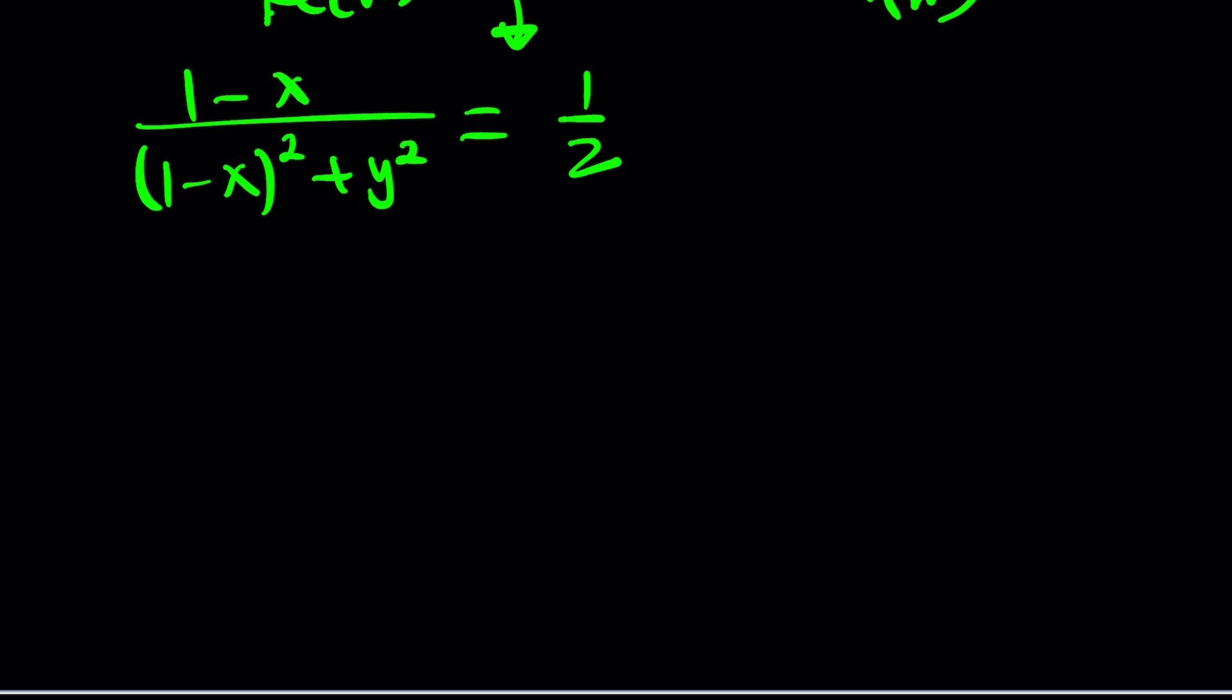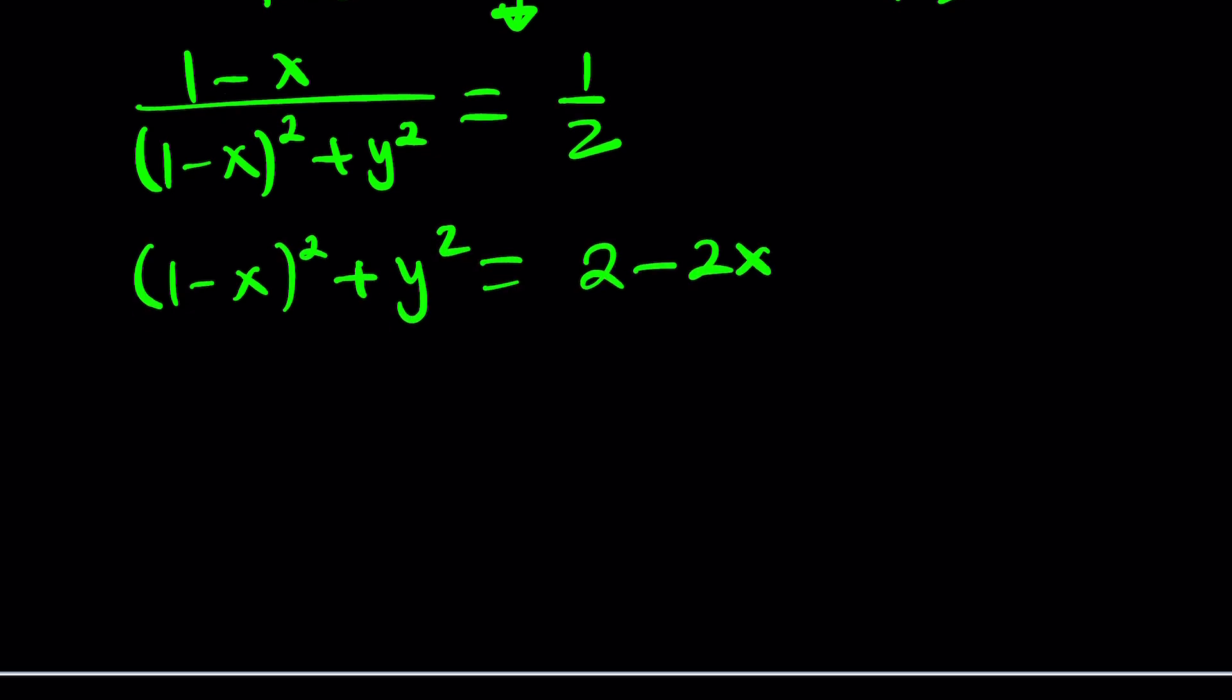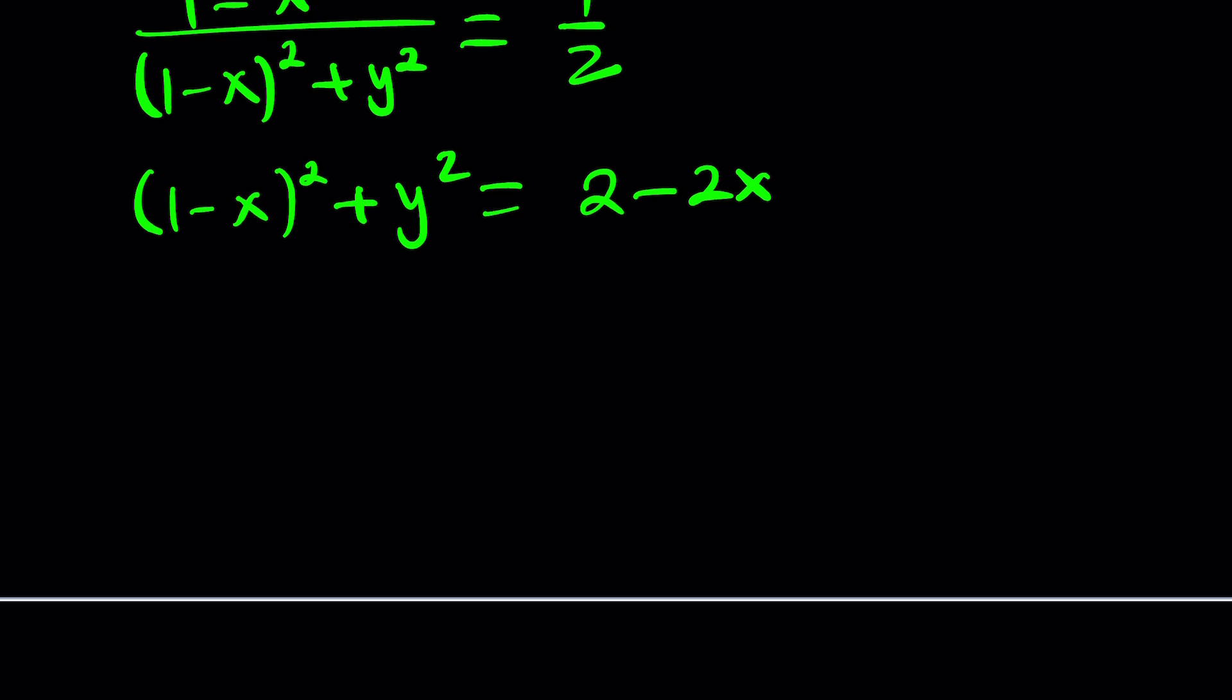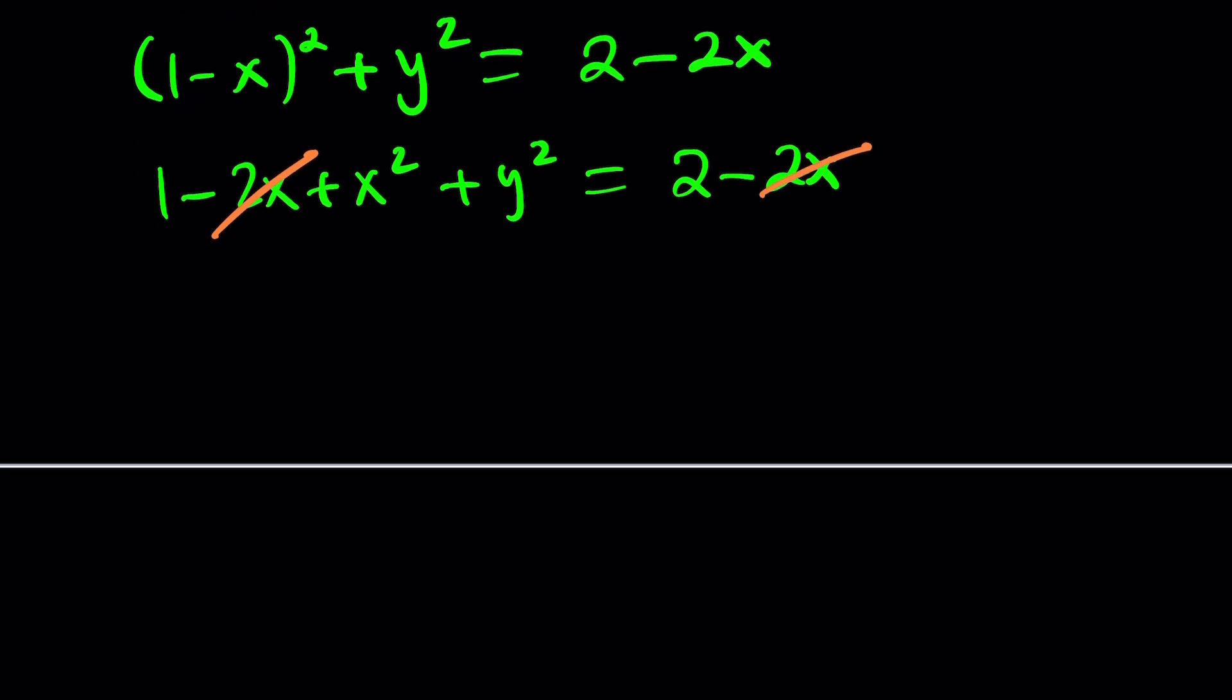So let's go ahead and cross multiply this first. We're going to get 2 minus 2x. And we can go ahead and expand it. This is going to be 1 minus 2x plus x squared plus y squared equals 2 minus 2x. And 2x is just going to cancel out. And then we're going to go ahead and put this together, x squared plus y squared. And we're going to subtract 1 equals 1.